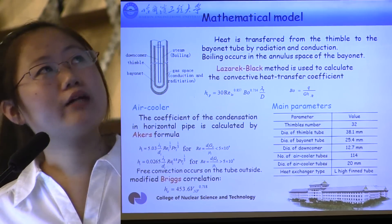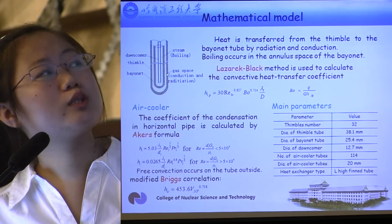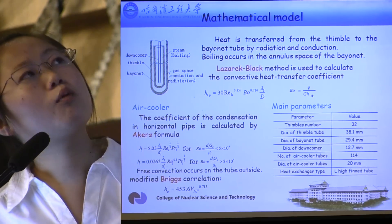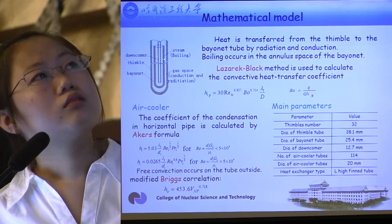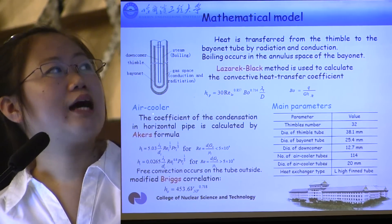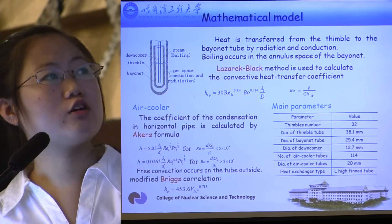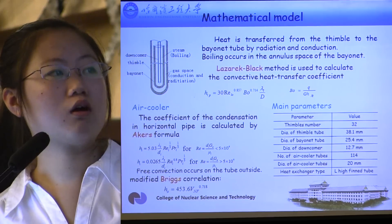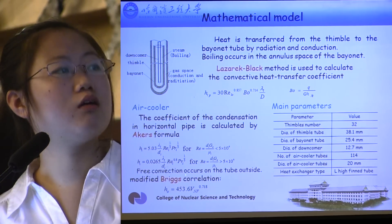Then I will introduce the mathematical model used in the system. In the thimble, between the bayonet wall and the thimble wall is a gas space. Conduction and radiation are the ways to transfer heat. In the bayonet annulus, boiling occurs and steam generates, so the Dittus-Boelter method is used to calculate the convective heat transfer coefficient. As for the air cooler, condensation occurs in the horizontal pipe, and the condensation coefficient is calculated by Ecker's formula. Free convection occurs on the tube outside, and the modified Churchill-Bernstein correlation is used to calculate the free convection coefficient.